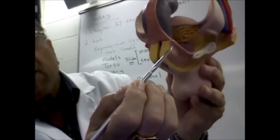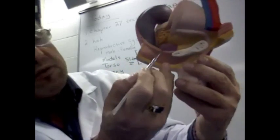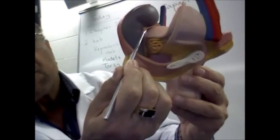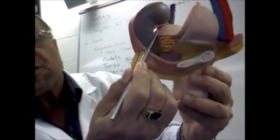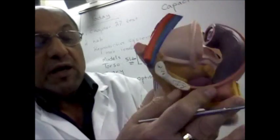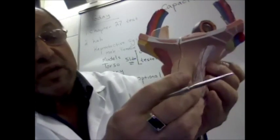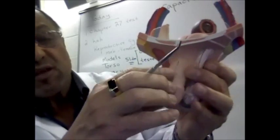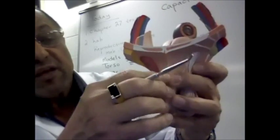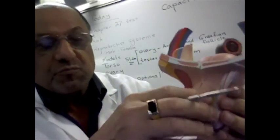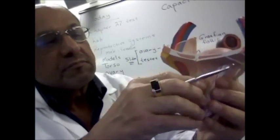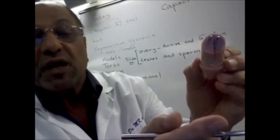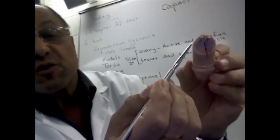And this is the rectum, part of the digestive system. This particular model we can dissect the penis and look at the erectile tissue of the penis. The two masses that we see on the top here represent the corpora cavernosa.